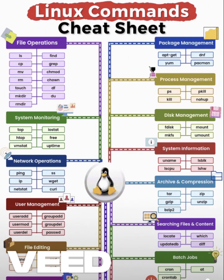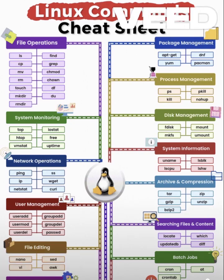System, Disk, and Security Commands — for system info, try uname, lsblk, and lscpu. Manage disks using fdisk, mkfs, mount, and umount. And don't skip security — use sudo, chmod, chown, and setfacl to control permissions like a pro.